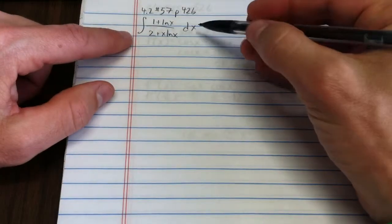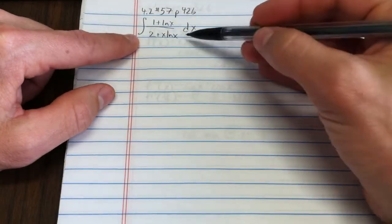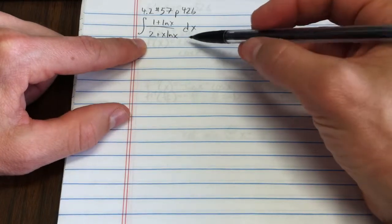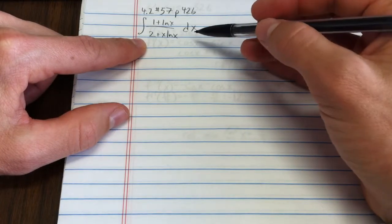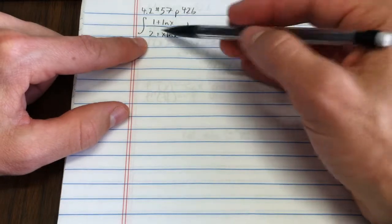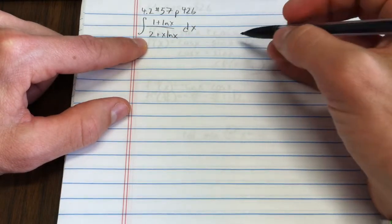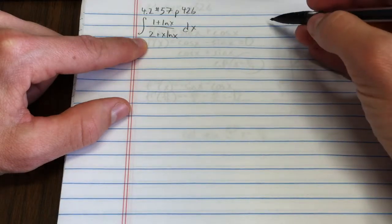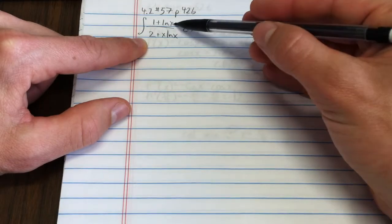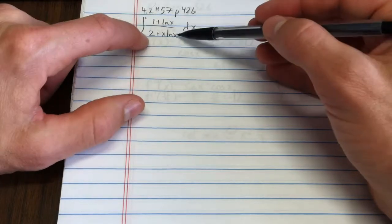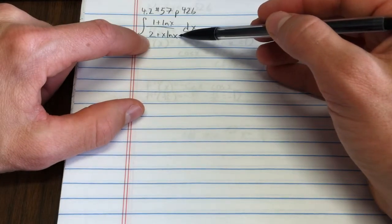Now you might try a couple of different things here. We're trying to figure out what our u should be. This is in the u substitution chapter, and obviously I don't know what to do with that to begin with, so I might try u as natural log of x, but then I need all of this times the derivative, which would be 1 over x.